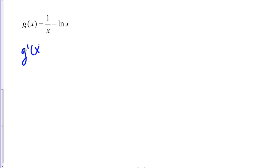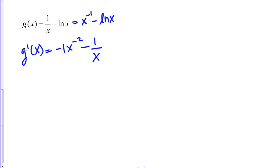Let's start by taking the derivative. g′(x): my original function is 1/x minus ln(x). I'll rewrite that as x⁻¹ minus ln(x) to make it easier to use the power rule. The derivative of x⁻¹ is −x⁻², and the derivative of ln(x) is 1/x. So g′(x) = −1/x² minus 1/x.